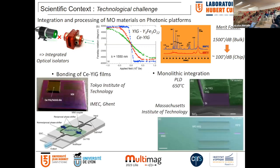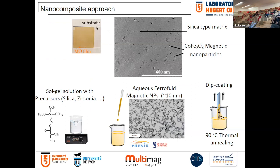This is a challenge, but people are working on it. One method is bonding — molecular bonding or adhesive bonding — done in Tokyo or at IMEC. You simply place a garnet film on a silicon chip, for example. It is efficient but not easy for large-scale integration. Another approach uses classical integration, as done by MIT using pulsed laser deposition. They integrate garnets on silicon waveguides and produce very beautiful isolators. However, they cannot realize the isolator together with a laser because of the temperature constraints.